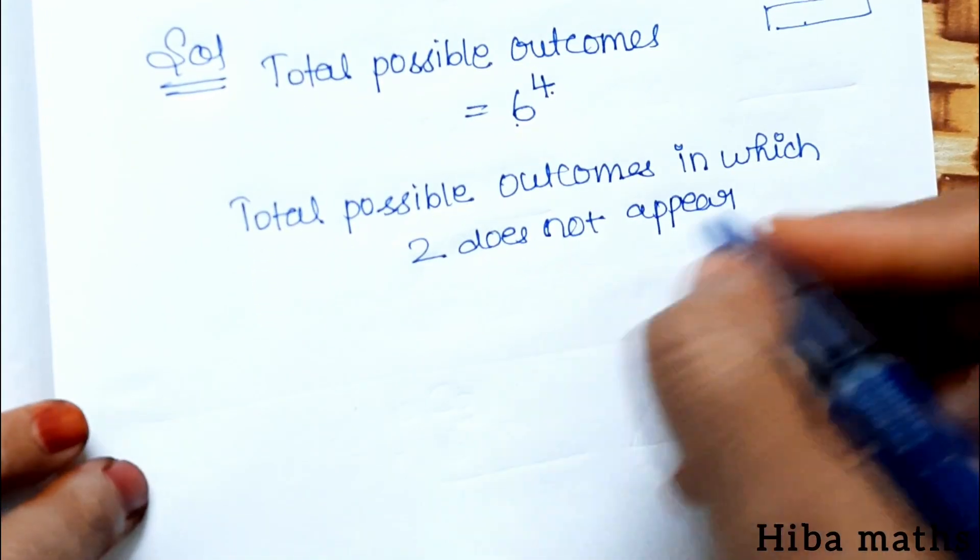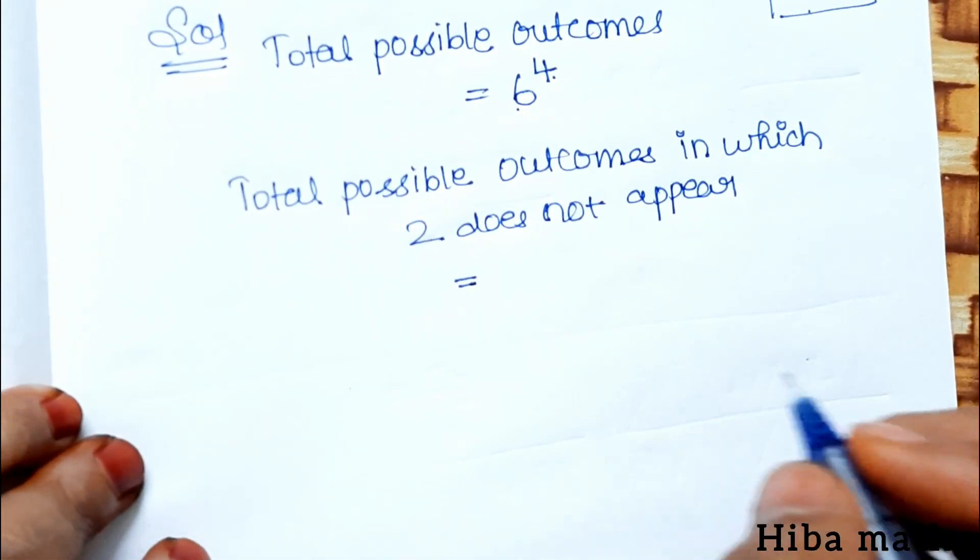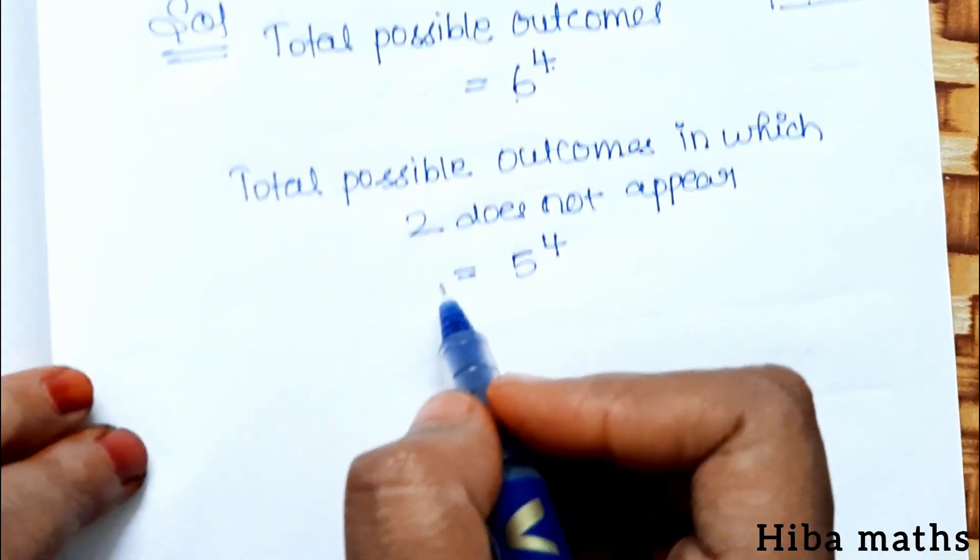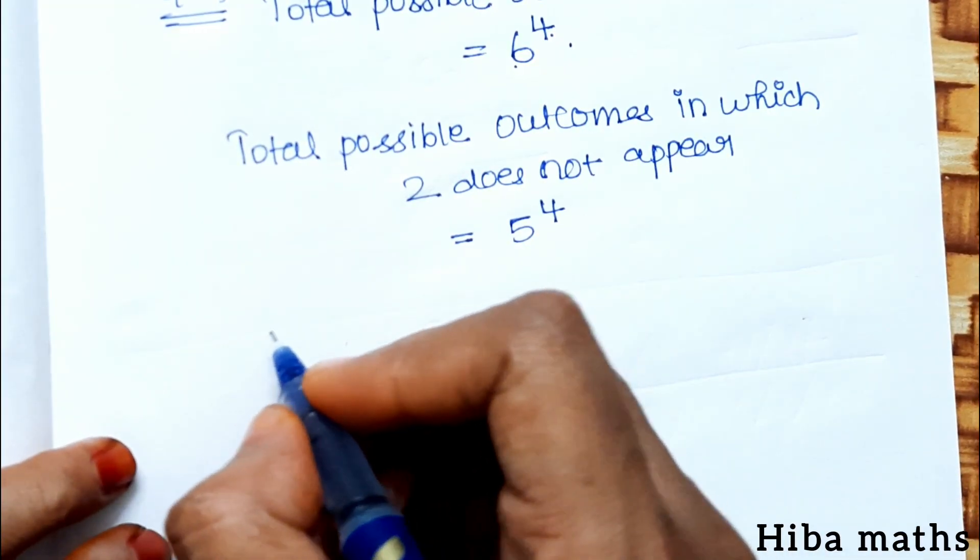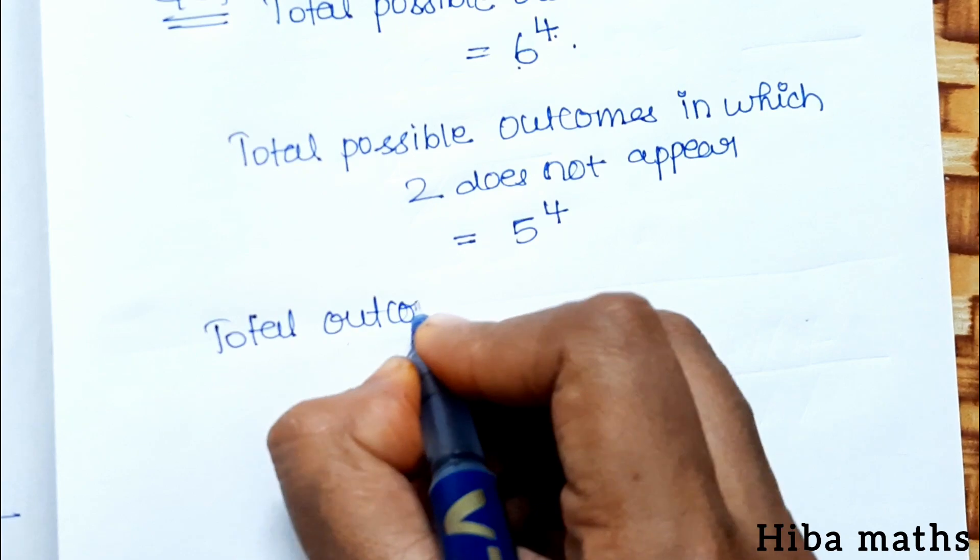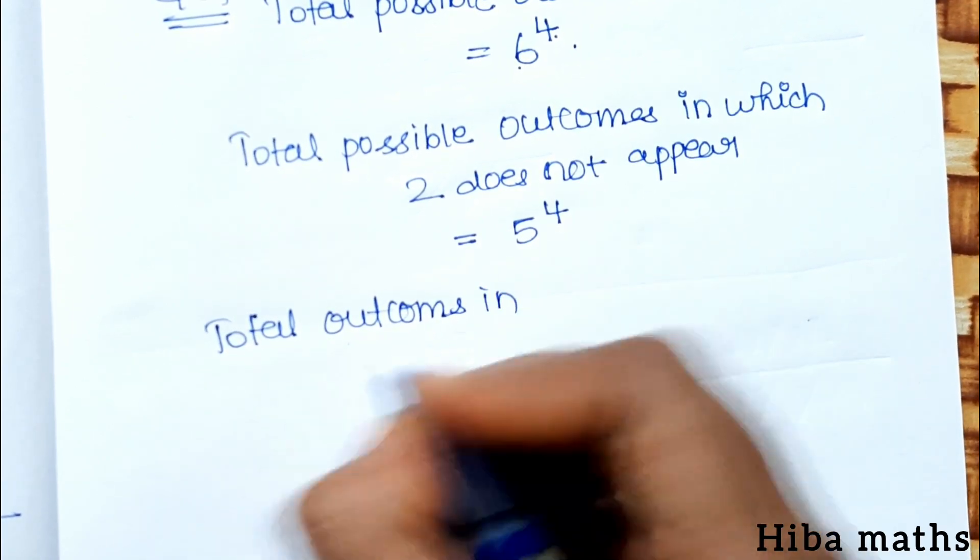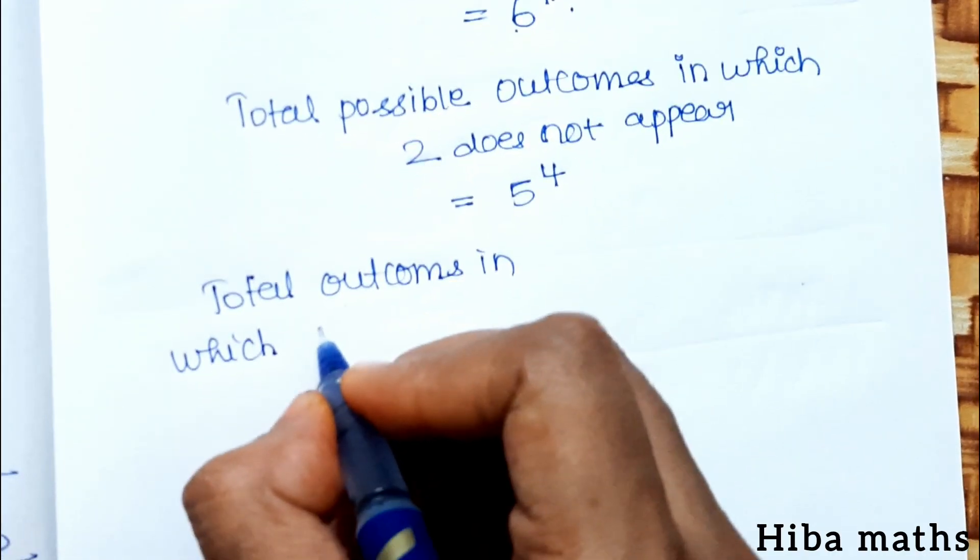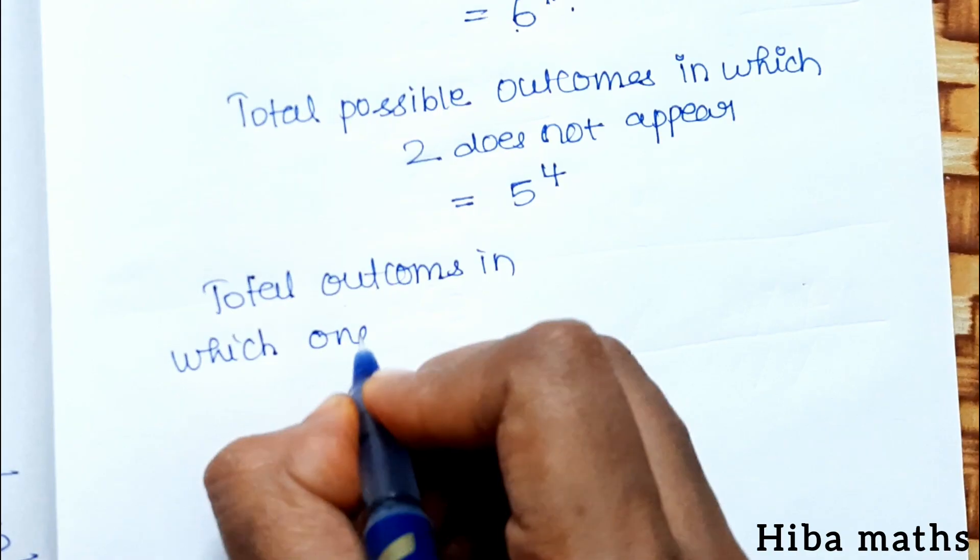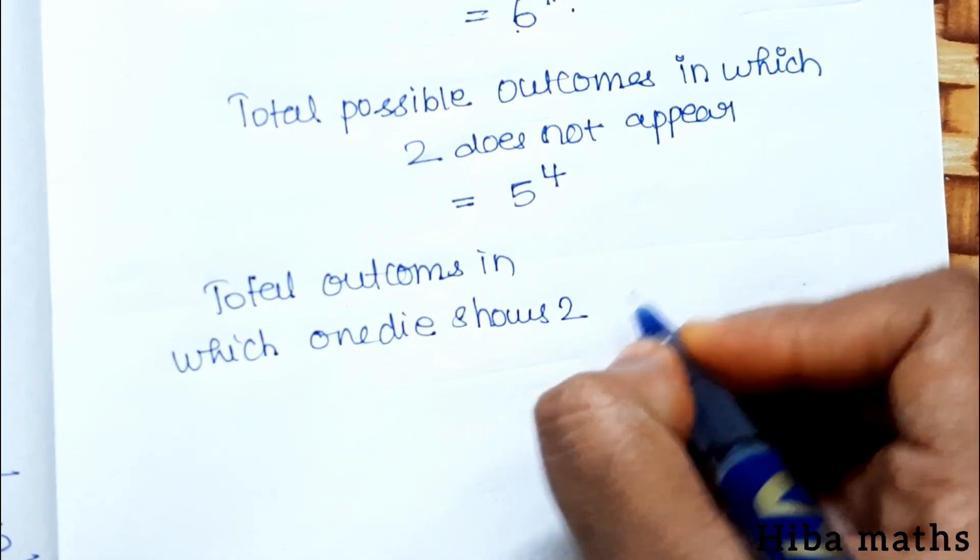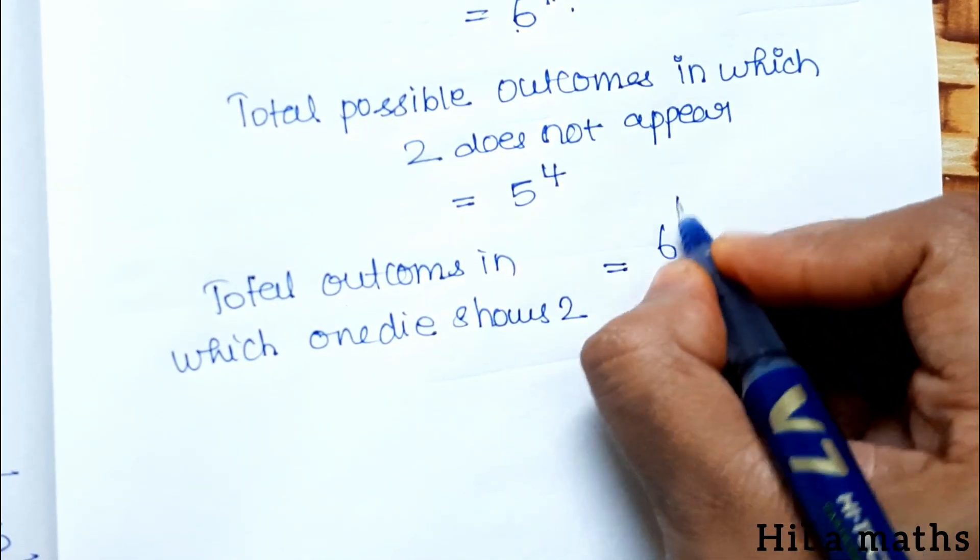Now, outcomes in which 2 does not appear. The question asks for outcomes in which at least one die shows 2. That equals total outcomes...